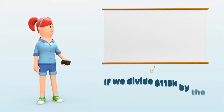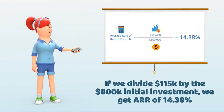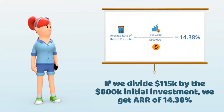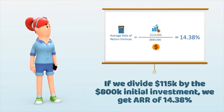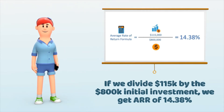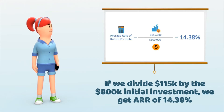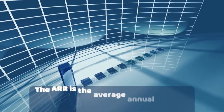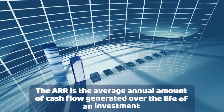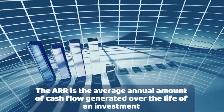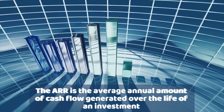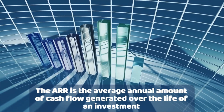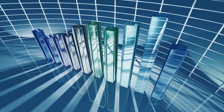Now, if you divide the average annual return of $115,000 by the initial investment of $800,000, you will be able to calculate the average rate of return equal to 14.38%. The average rate of return is the average annual amount of cash flow generated over the life of an investment.